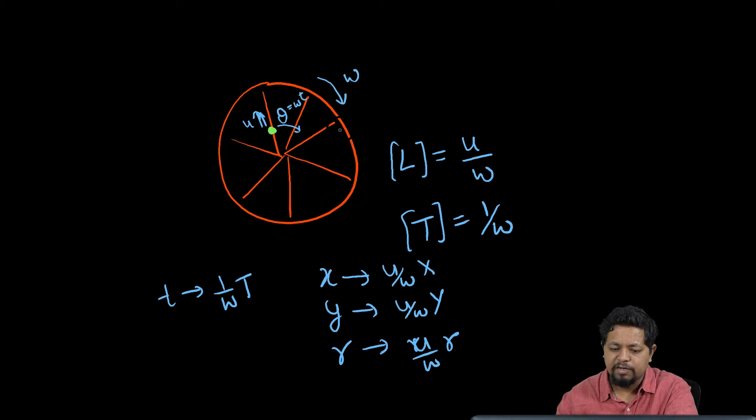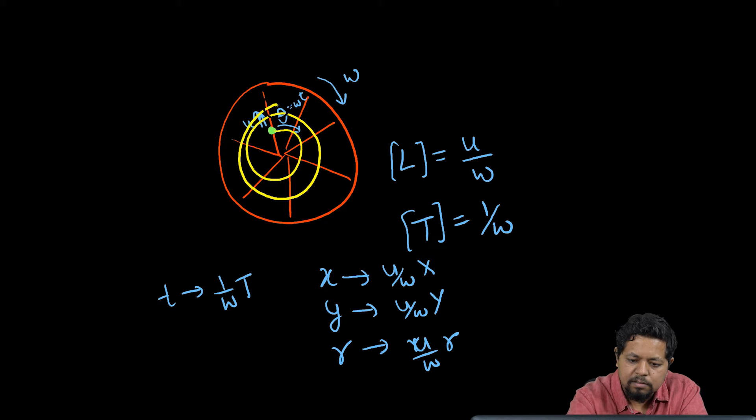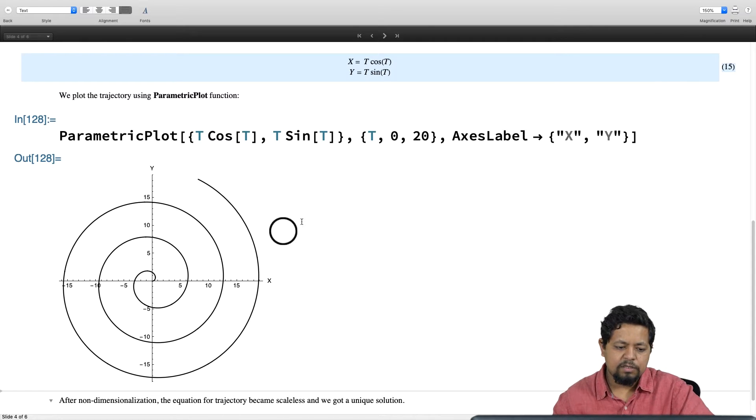The bead is going to have a trajectory that is spiralling out like this, and that is what this plot shows. In order to make this plot, we have used the parametric plot function.